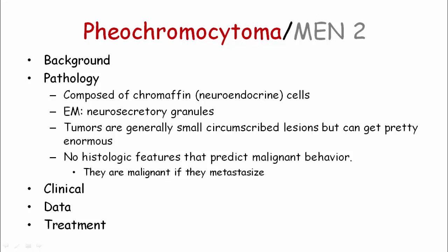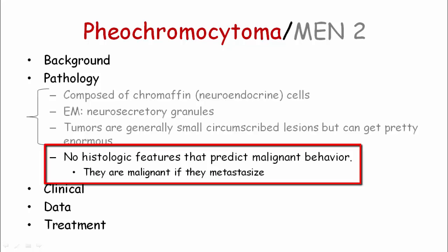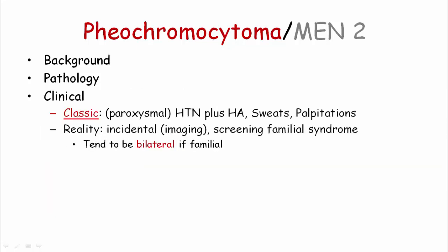As for the pathology, the tumors are composed of neuroendocrine or chromaffin cells, with chromaffin referring to their staining properties. Electron microscopy demonstrates neurosecretory granules. The tumors are generally small but can get quite large. Interestingly, there are no definitive histologic features that predict malignant potential — you don't know if a pheo has malignant properties until and unless it metastasizes. Pay attention to this, as it is a memorable line in pathology.